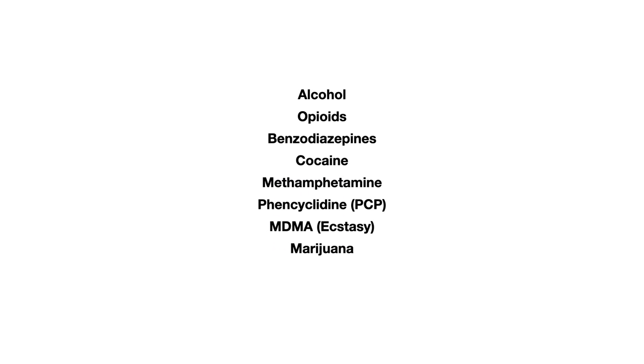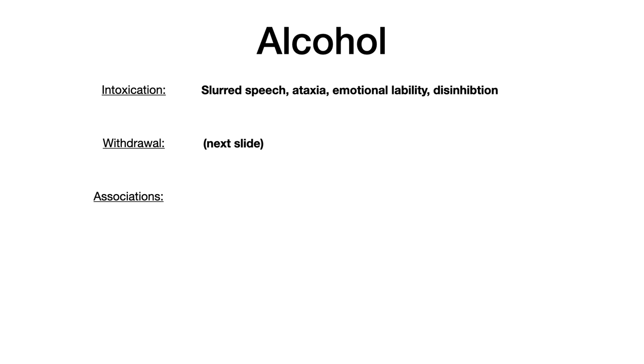Now let's get into this video. We're going to start with alcohol. Let's talk briefly about what it looks like when somebody's intoxicated from alcohol and when somebody's withdrawing from alcohol. Intoxication, as most of you probably know already, includes slurred speech, ataxia, emotional lability, and disinhibition. Most of us have experienced somebody that had a little bit too much to drink and showed these symptoms of alcohol intoxication.